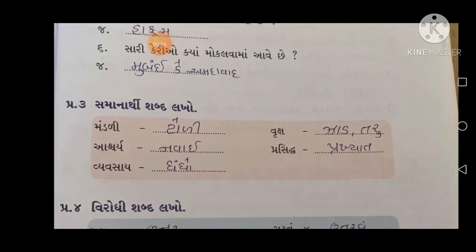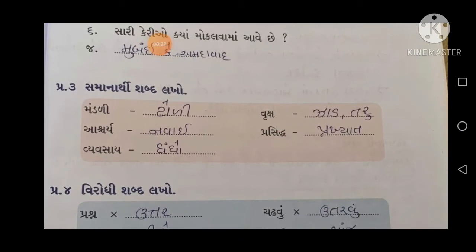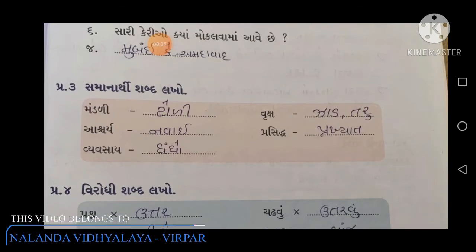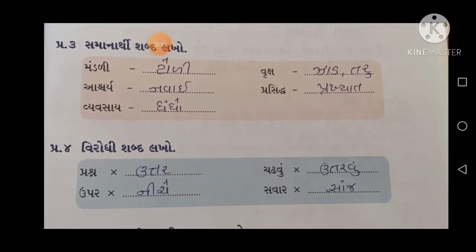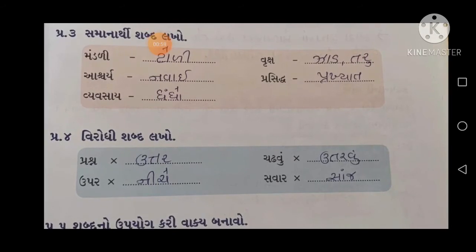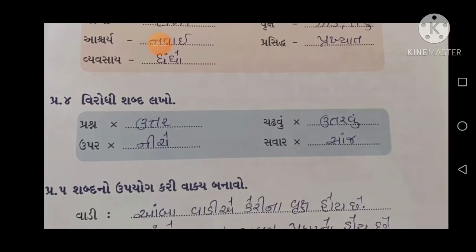Question number 3: સમાનાર્થી શબ્દ લખો — સમાનાર્થી શબ્દ એટલે જે શબ્દ આપ્યો છે તેના જેવો જ અર્થ ધરાવે. ઝાડ — અથવા — તરુ. પ્રસિદ્ધ — તો — પ્રખ્યાત. Question number 4: વિરોધી શબ્દ લખો — વિરોધી શબ્દ એટલે કે opposite.